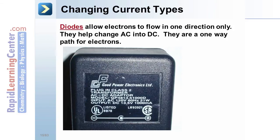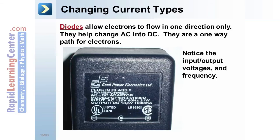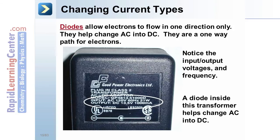Take a look at this transformer. Note the input and output voltage is mentioned, and the frequency is given also. This would contain diodes to help change AC into DC.